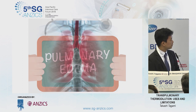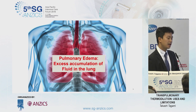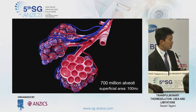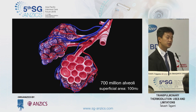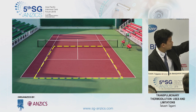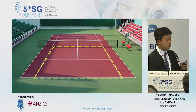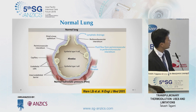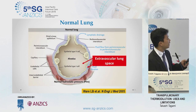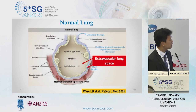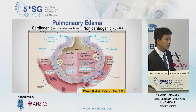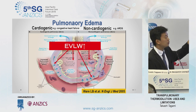Let's go back to the basics. Pulmonary edema is excess accumulation of fluid in the lung. Our lungs have 700 million alveoli. Each one of the alveoli is very small, but the surface area of both lungs is about 100 square meters — just as large as a huge tennis court. In the normal alveolus, interstitium, and capillary, the space outside the capillary is called extravascular lung space. The fluid in this space is called extravascular lung water, which increases in both cardiogenic and non-cardiogenic pulmonary edema.